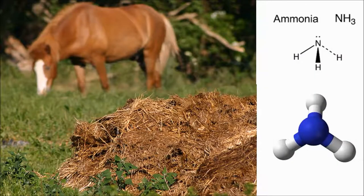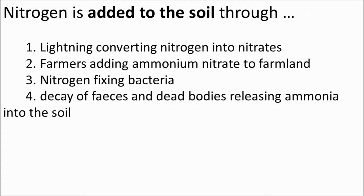Decomposers like bacteria and fungi break down the feces and dead bodies of animals, and in the process they release nitrogen in the form of ammonia back into the soil. So to summarize, the ways nitrogen is added to the soil are: lightning, fertilizers, nitrogen-fixing bacteria, and decomposition.